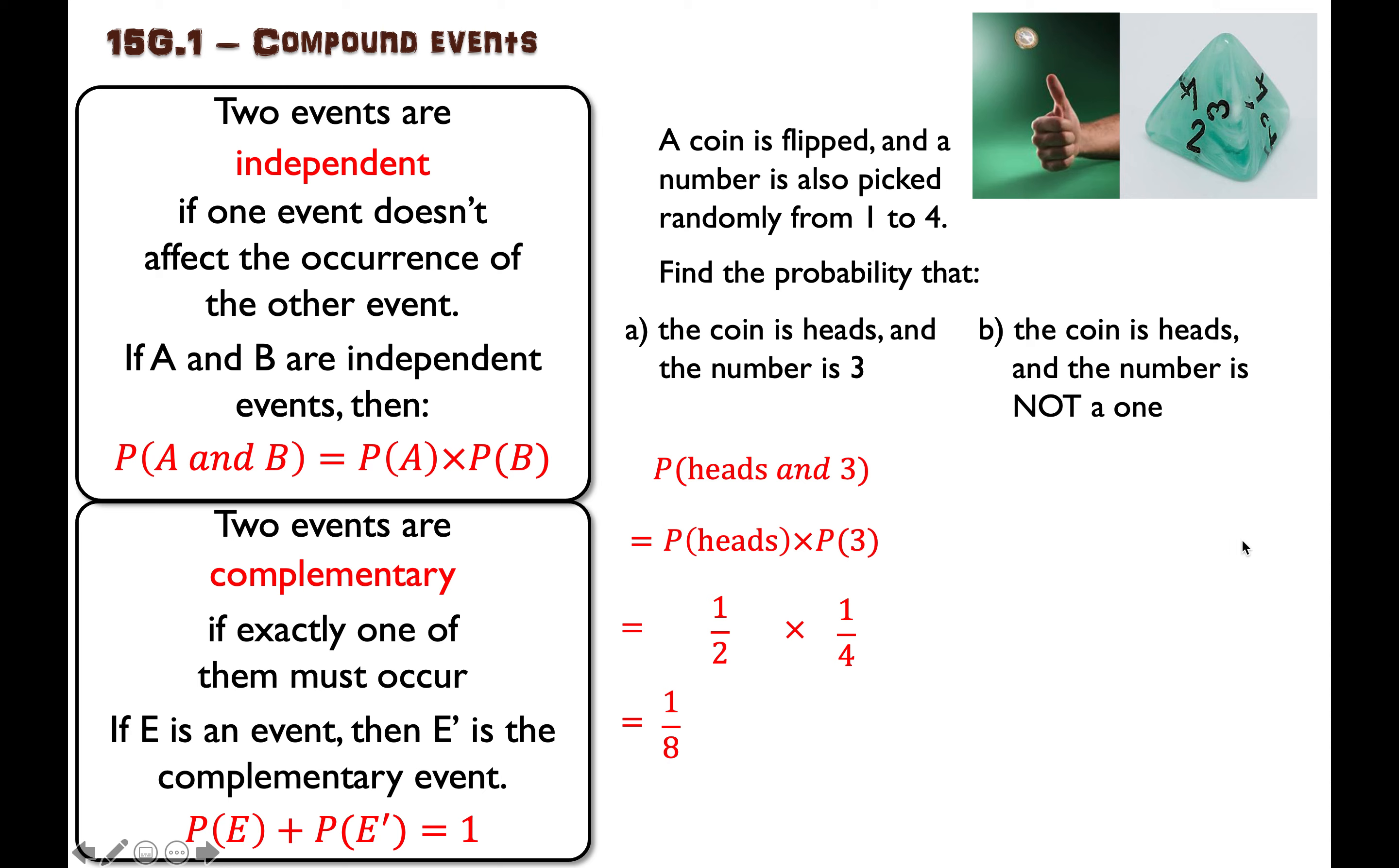In the second example here, we have another compound event, two events that must happen together. And it says we want to find the probability that the coin is heads and the number is not a one.